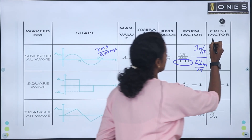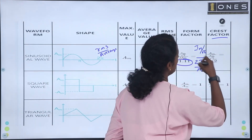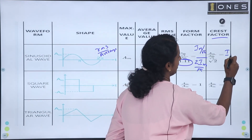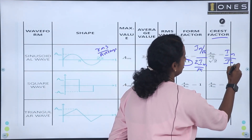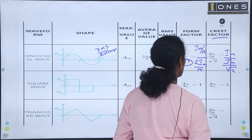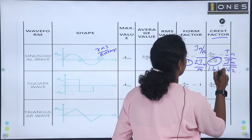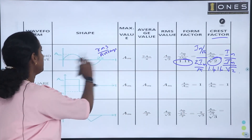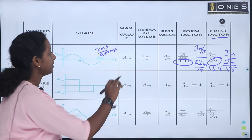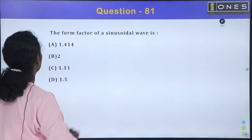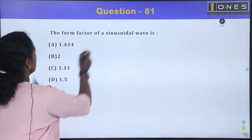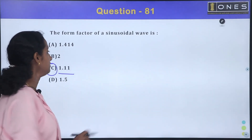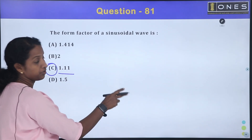The peak factor is the maximum value divided by the RMS value — that is Im divided by (Im / root 2) — giving us 1.414. So for a sine wave, the form factor is 1.11 and the peak factor is 1.414.